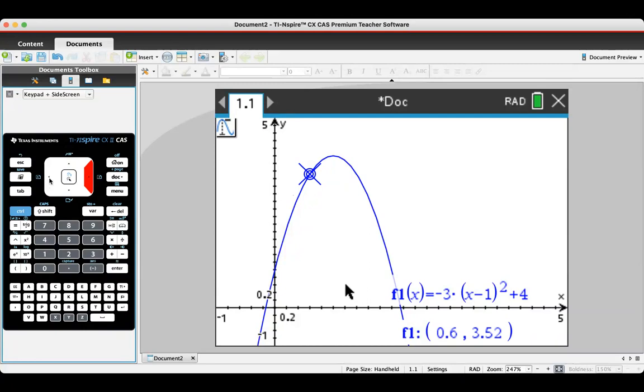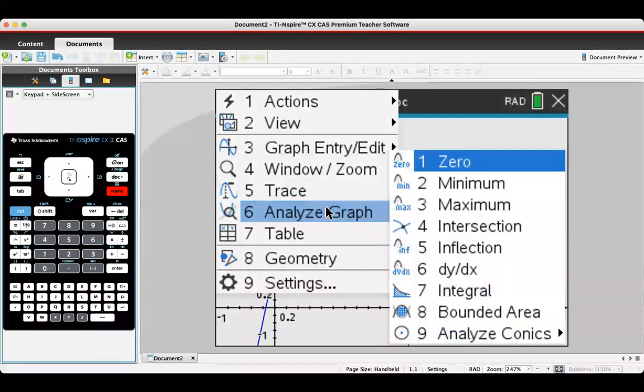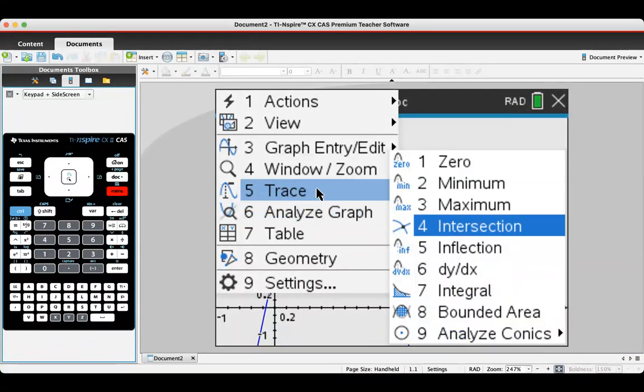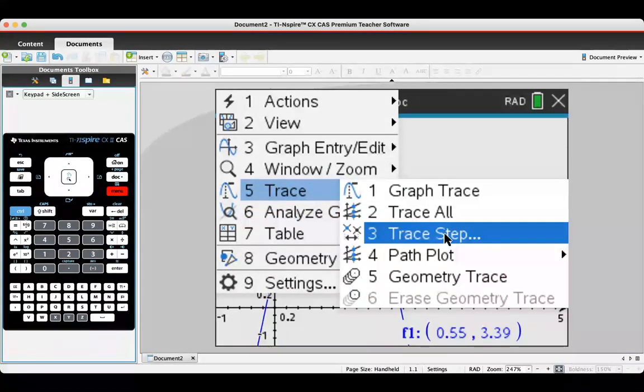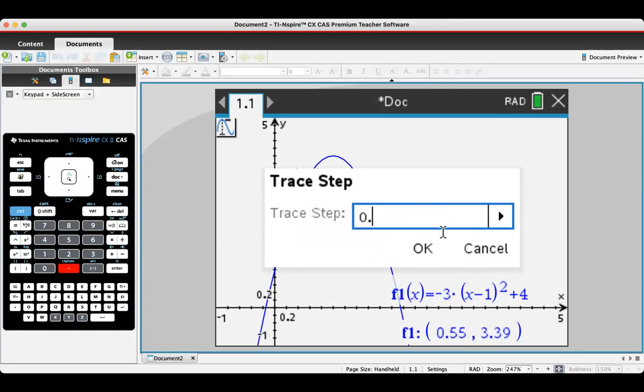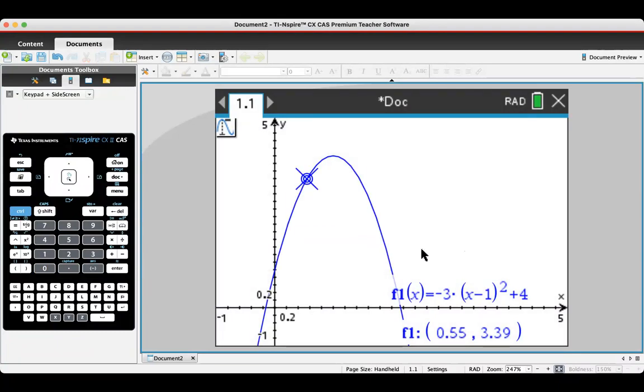There I go. What about 0.56? Oh, I can't do it. Now technically I could go to the menu button and click on analyze graph, and I could then, sorry, go to trace and then go to trace step.